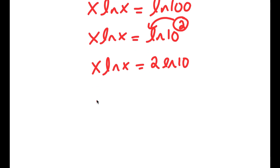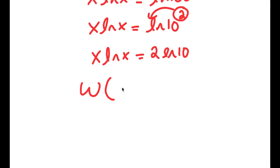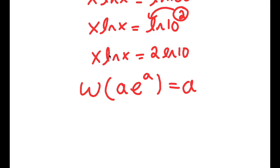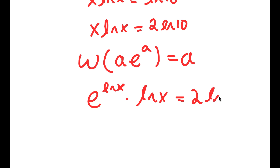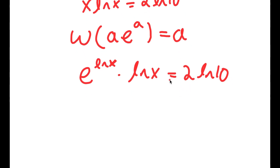Now, there's something called the Lambert W function. If I take the Lambert W function of something in the form a times e to the power of a, this is going to equal a. So what I'm going to do is rewrite x as e to the power of ln x, because e and ln cancel out, resulting in simply x. So I rewrite x as e to the power of ln x, and I have this times ln x is equal to 2 times ln 10. Now this is in the form a times e to the power of a.